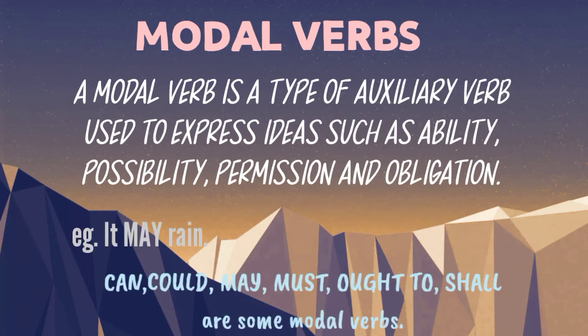Modal verbs. A modal verb is a type of auxiliary verb used to express ideas such as ability, possibility, permission, and obligation. Jho verbs ability, possibility, permission and obligation ko batathe hain, unne hum modal verbs kehte hain. Ye ek tarha ke auxiliary verbs hi hoote hain. Can, could, may, must, ought to, shall are some modal verbs. For example, it may ring — may is a modal verb. I shall help you — shall is also a modal verb. A detailed video on modal verbs part 1 is available on our YouTube channel for better understanding.